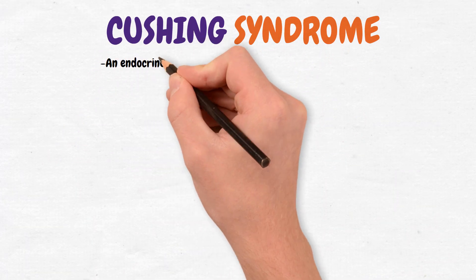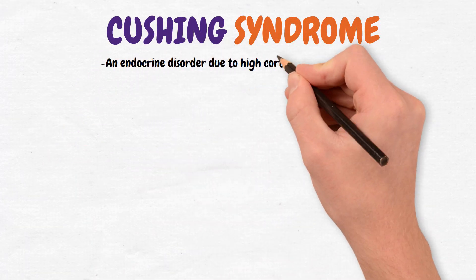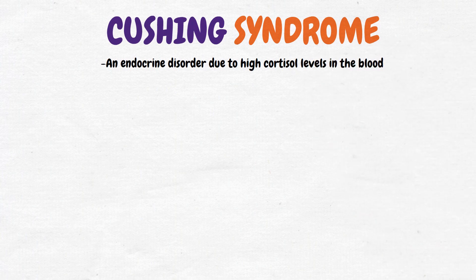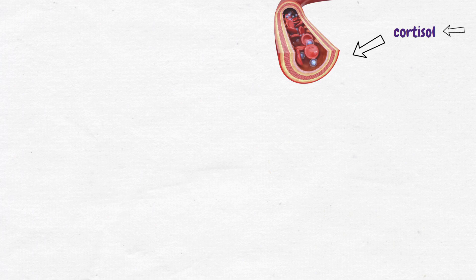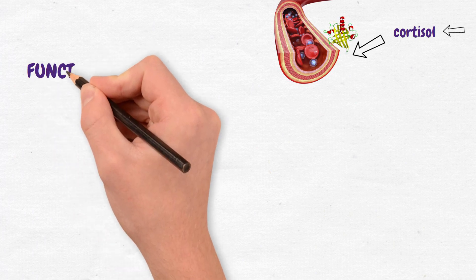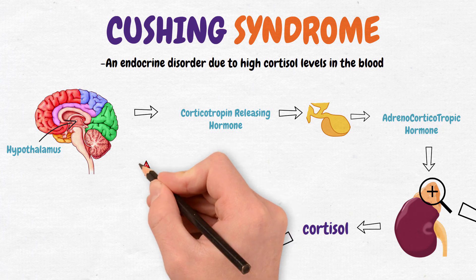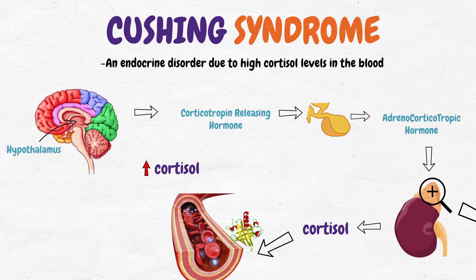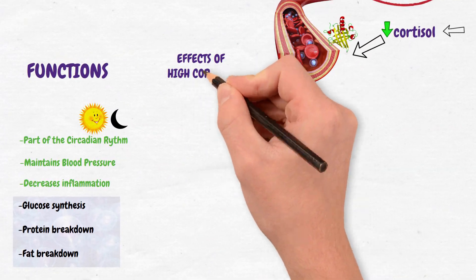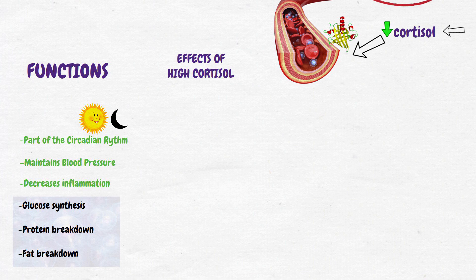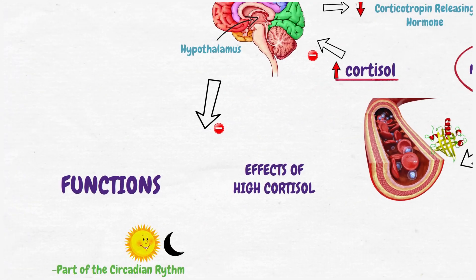Cushing's syndrome is an endocrine disorder due to high cortisol levels in the blood. Cortisol is secreted in the blood and bound with cortisol-binding globulins, and has several functions. One key mechanism is negative feedback — high levels of cortisol block CRH production from the hypothalamus.